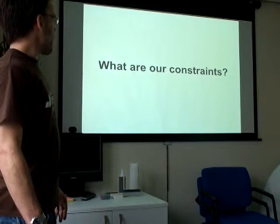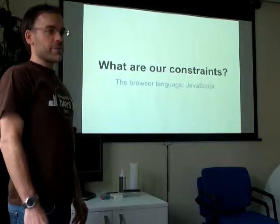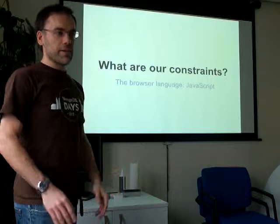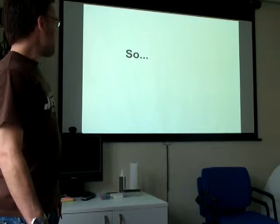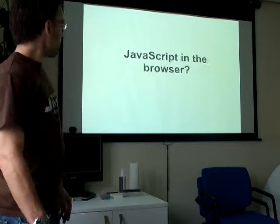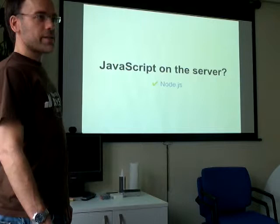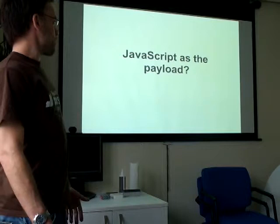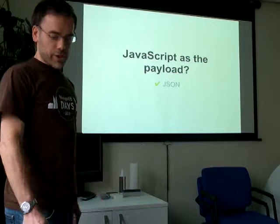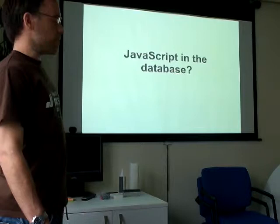What are our constraints? The browser language is JavaScript - we can't change all the browsers in the world and say we're going to use Scala as the scripting language. Given that constraint, can we use JavaScript everywhere? Can we use JavaScript in the browser? Of course. On the server? Yes, with the advent of Node.js, it's now plausible to run JavaScript outside the browser. As the payload? Yes, we've been using JSON for a while. And in the database? Yes, with JSON document databases.